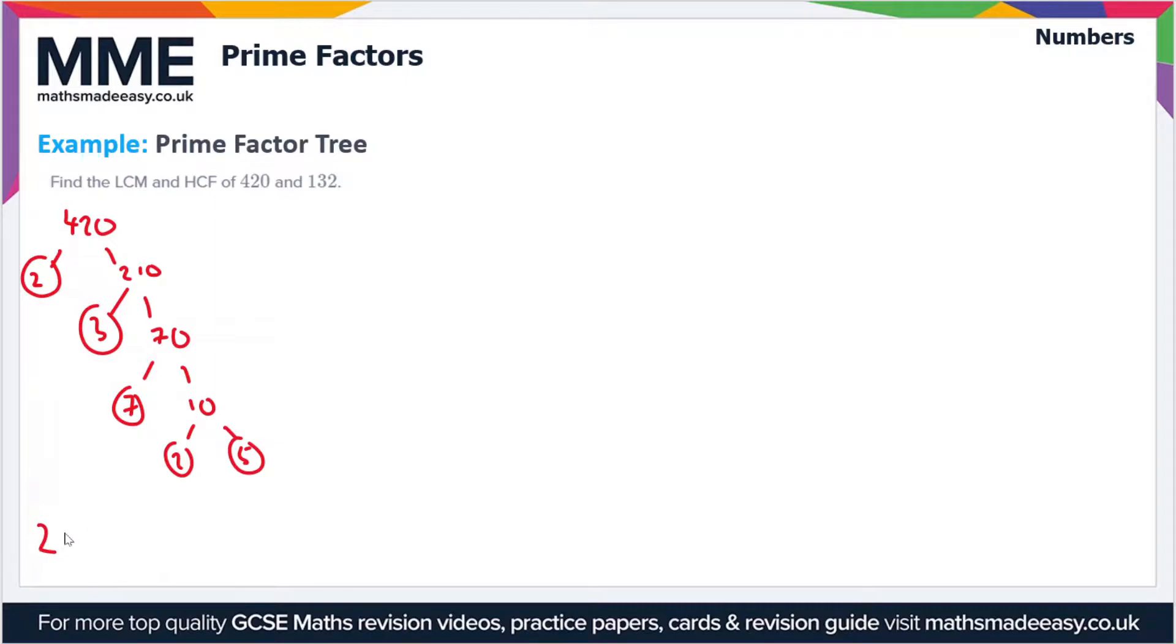We can write this prime factorization as 2 × 2 × 3 × 5 × 7. I'm writing these in ascending order because it makes it easier when we do the Venn diagram. Next, let's do the prime factorization of 132.